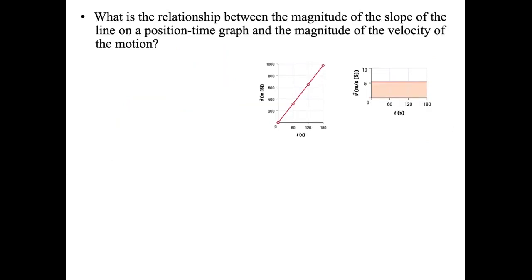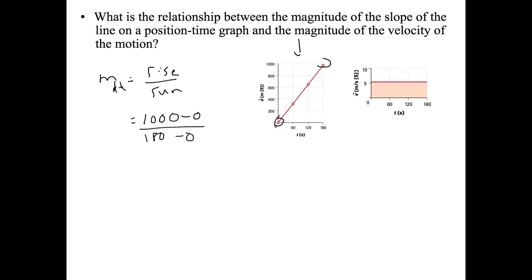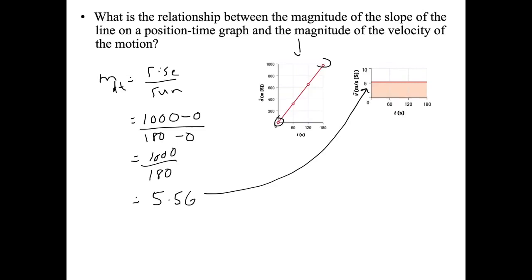What is the relationship between the magnitude of the slope on a position-time graph and the magnitude of velocity? Looking at the slope of the d-t graph, rise over run from zero to 1000 meters over 0 to 180 seconds gives 1000 over 180, which equals 5.56. Looking at the velocity-time graph, the value is the same — they are equal to each other.